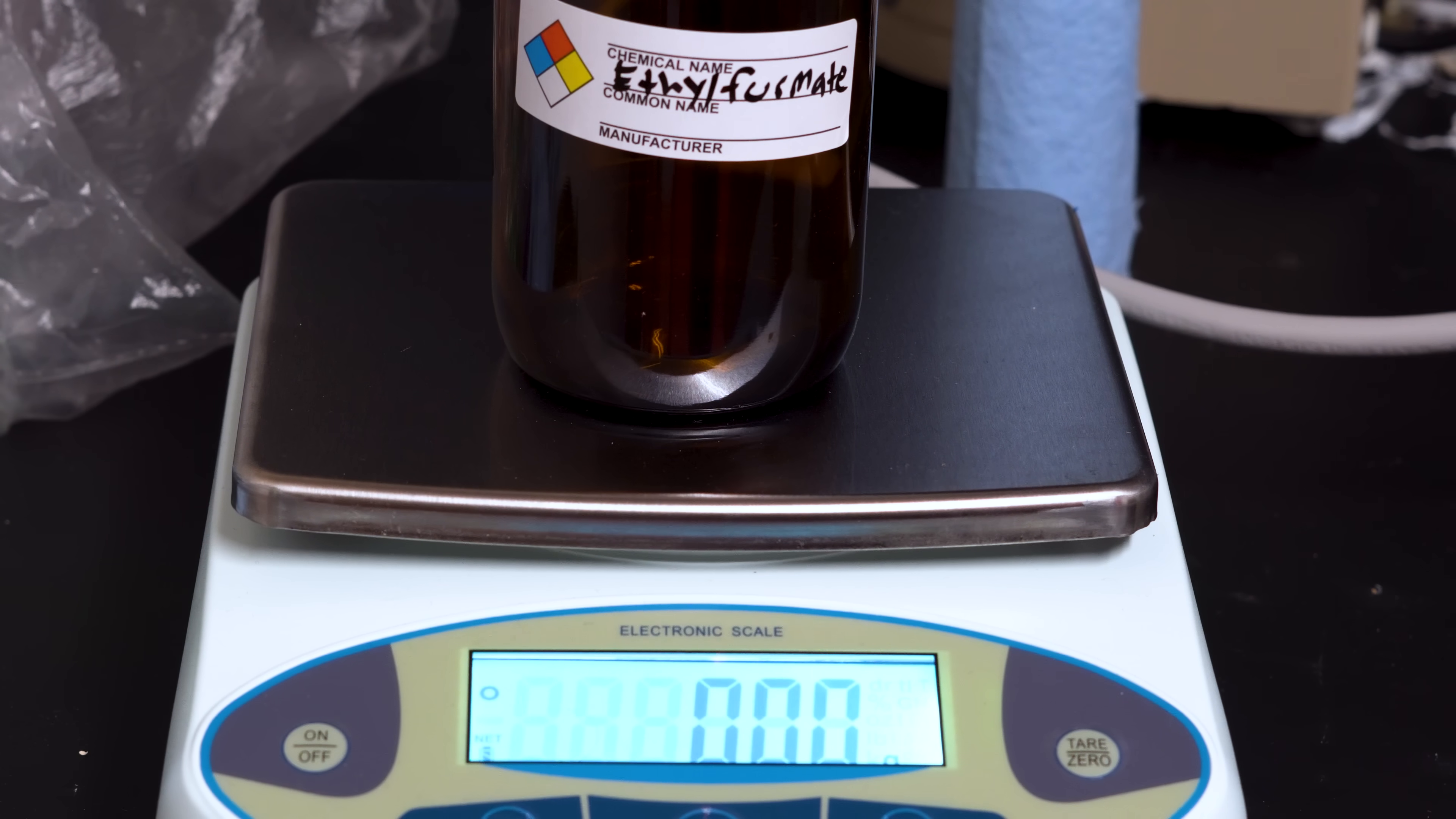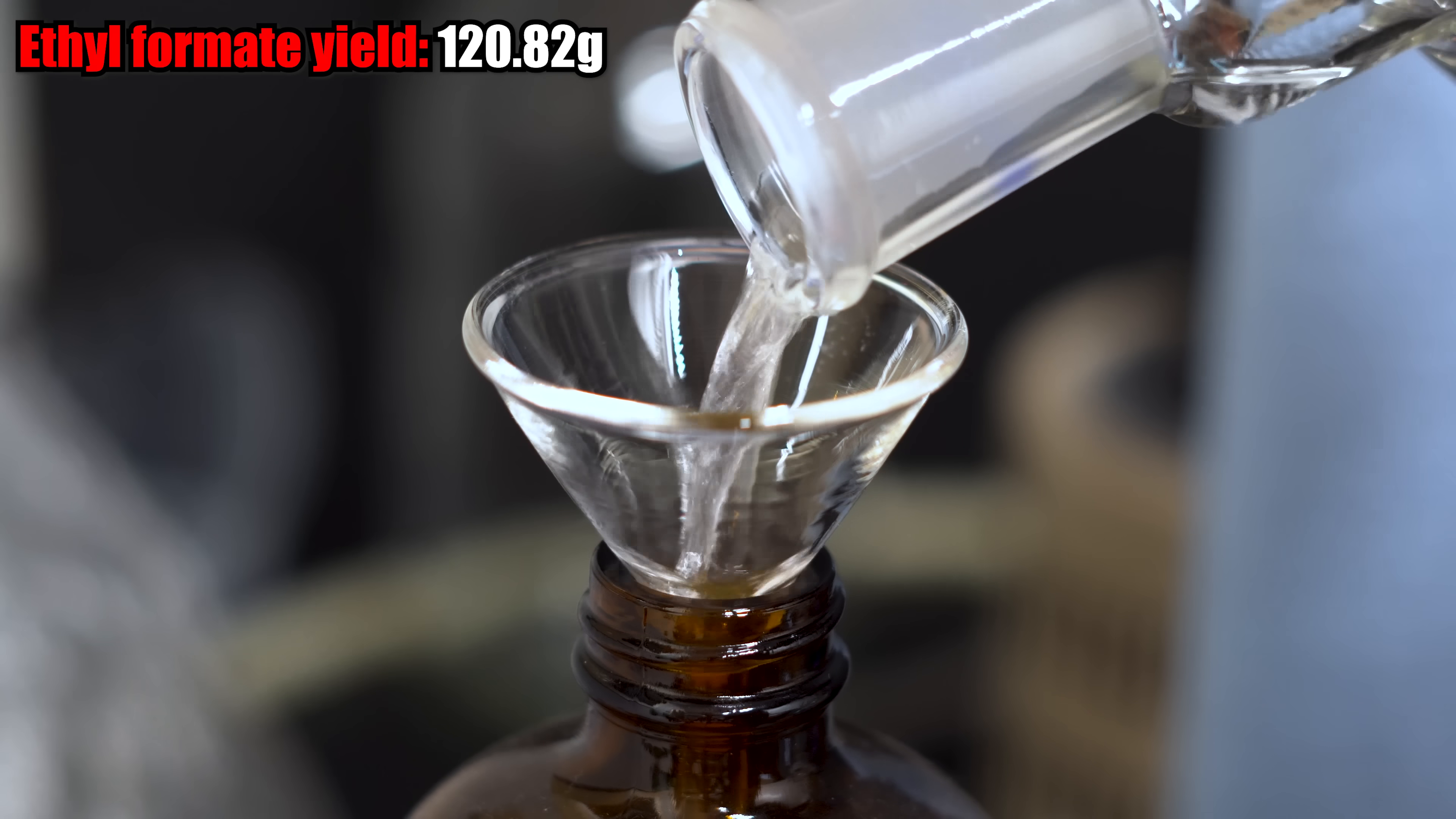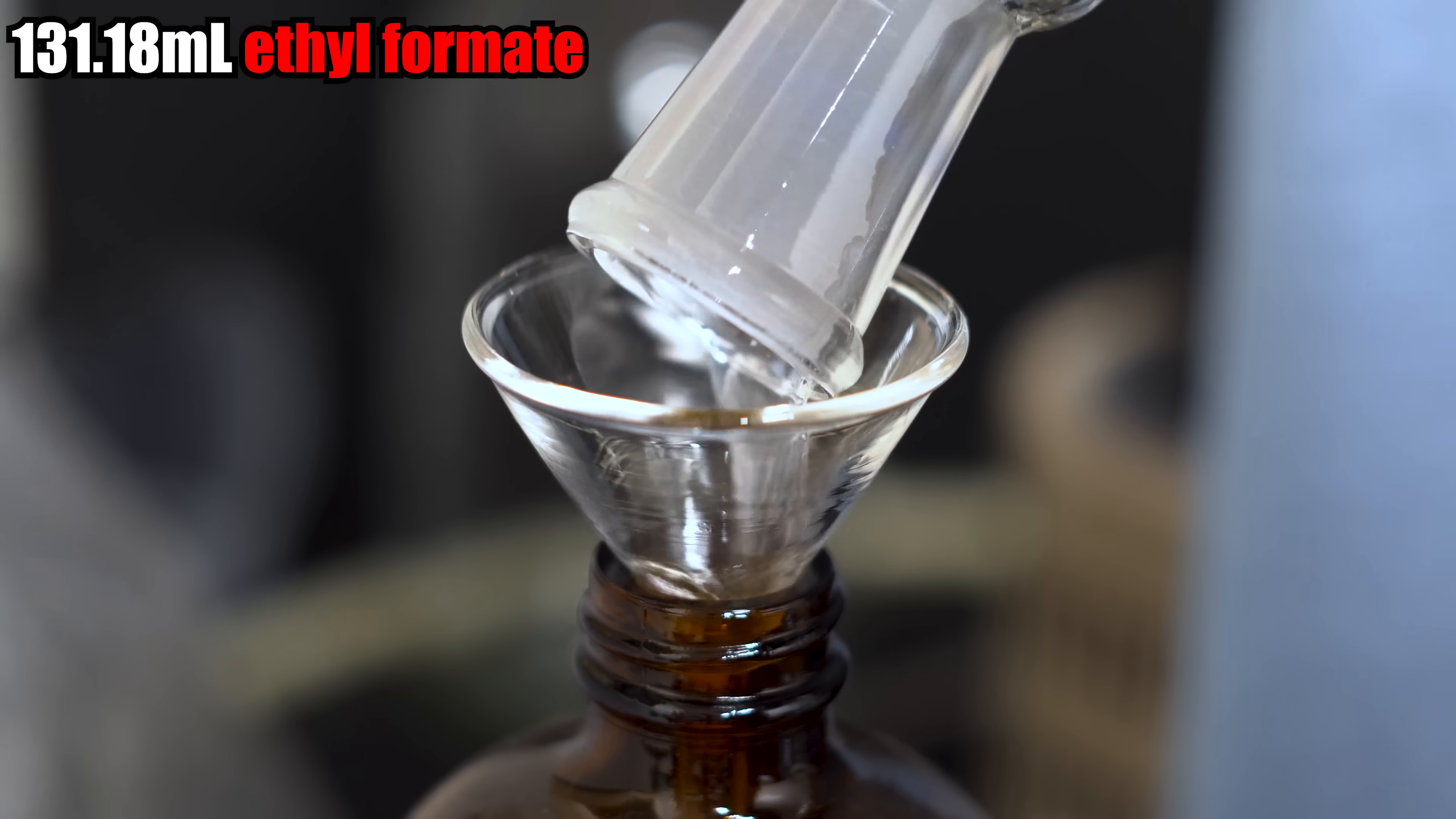I also weighed out how much ethyl formate I got. In the end, I got about 120.82 grams of ethyl formate. If this is pure, this would give us around 131.18 milliliters of ethyl formate.